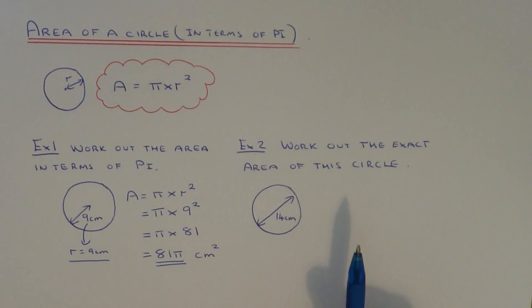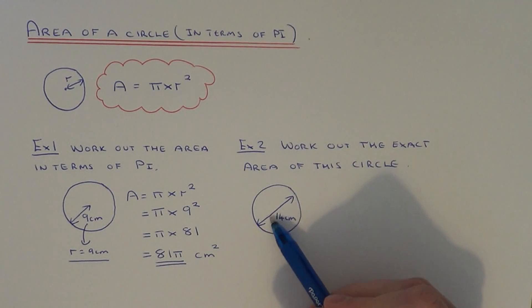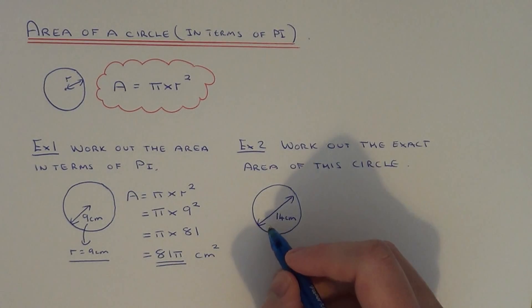Let's move on to example two. This time we have a circle where we're given the diameter, which is 14 centimeters. Be careful on this one because it's the radius which we need to substitute into our formula.